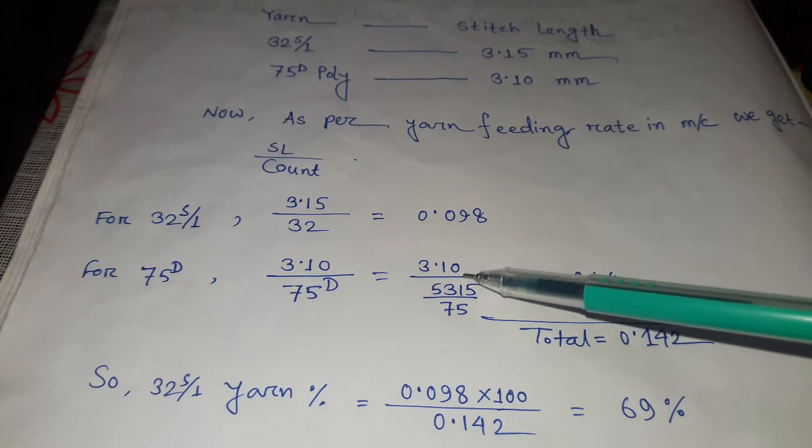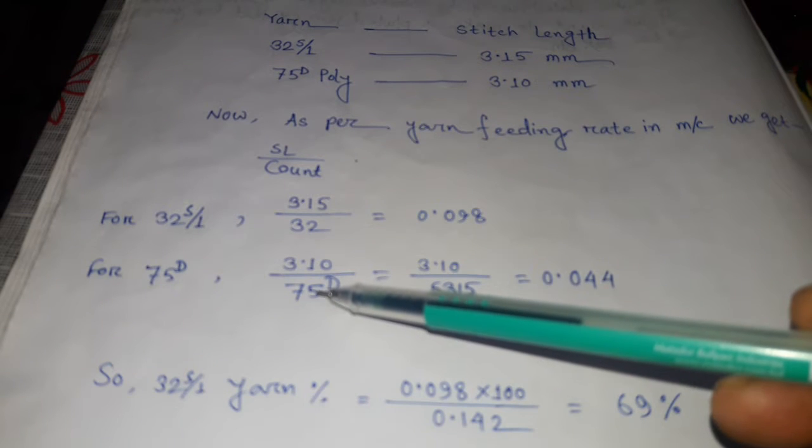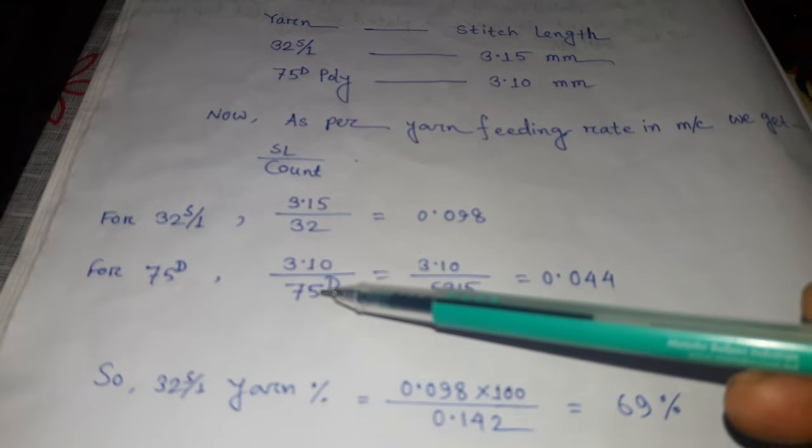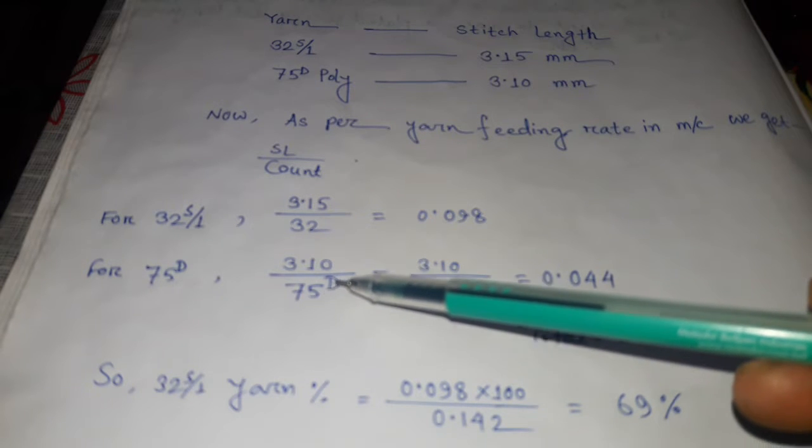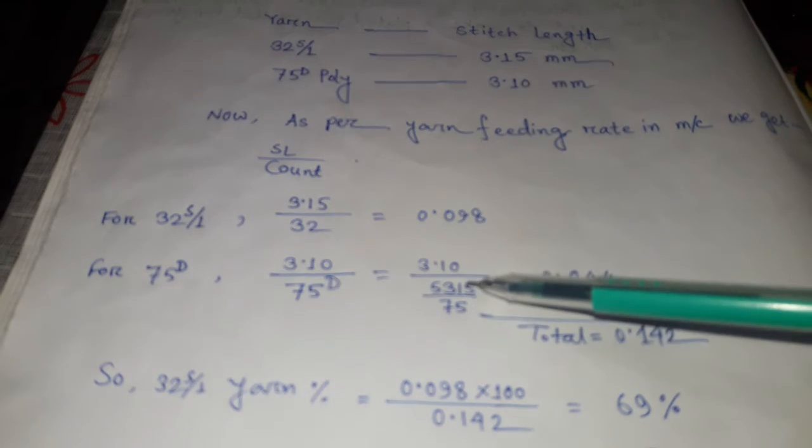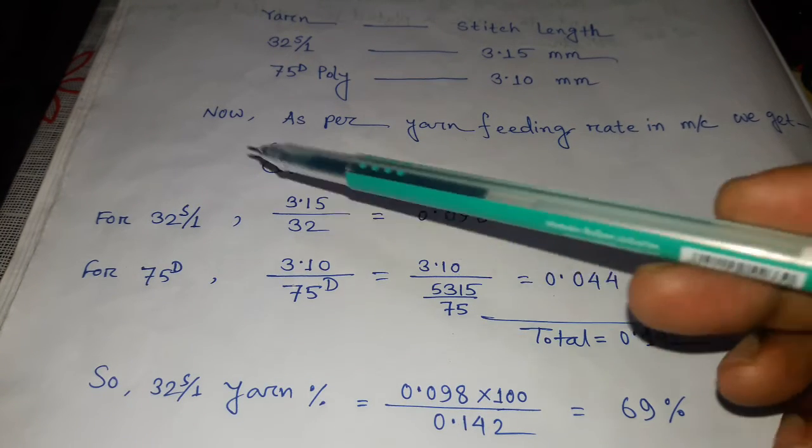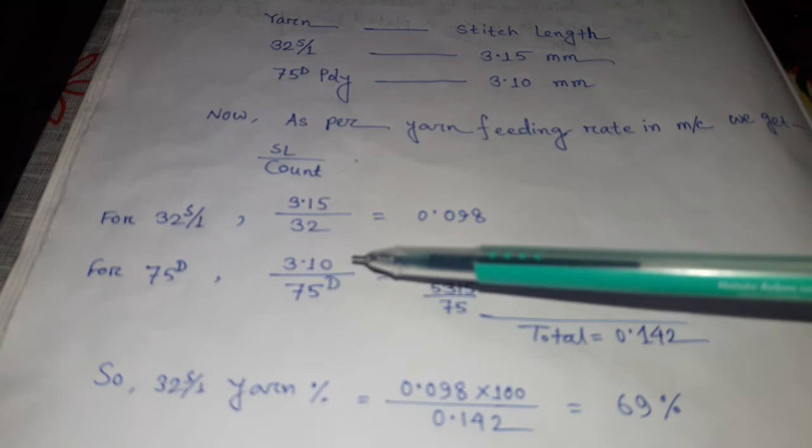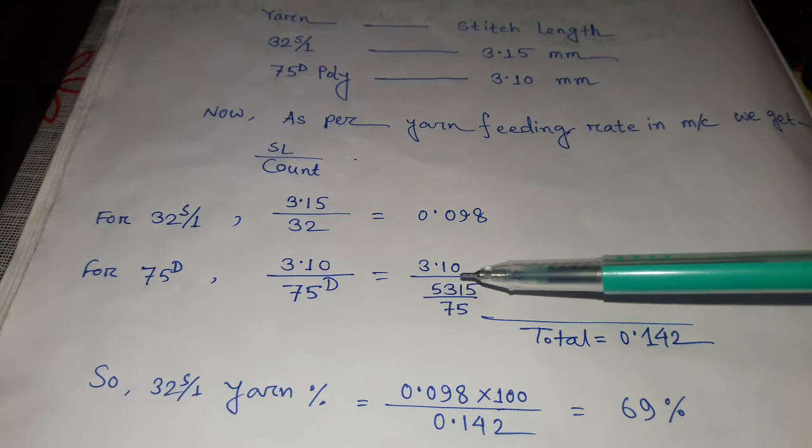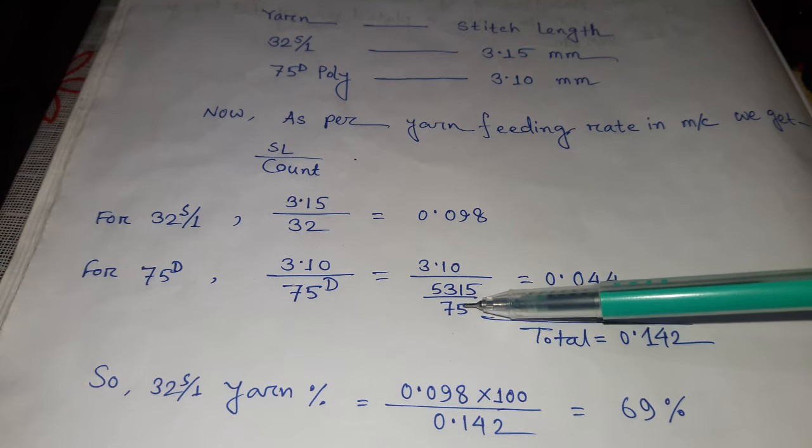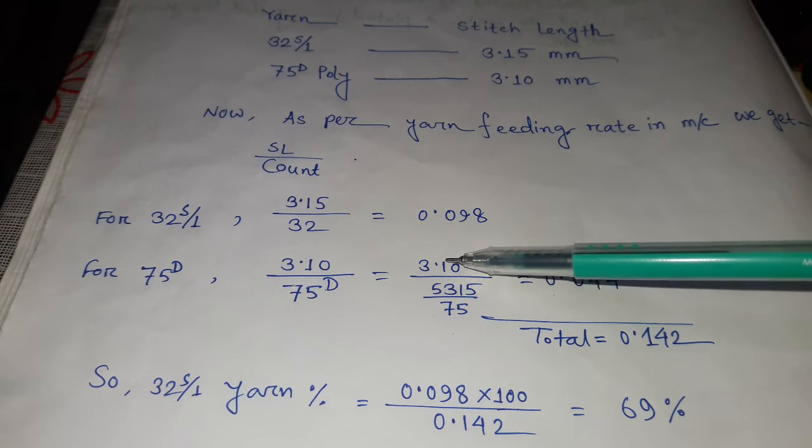Equals 3.10 divided by polyester. Here we need to convert it to cotton count because 32 single is cotton count. So 5315 divided by 75, then we calculate...